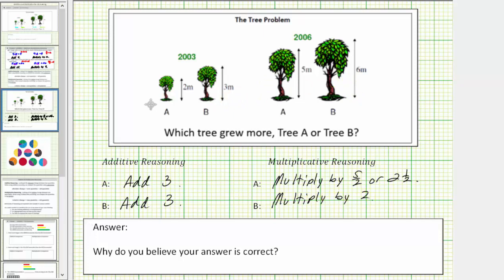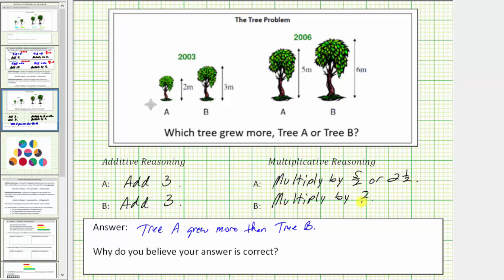There is more than one way to answer the question: which tree grew more? Using additive reasoning, we can say the trees grew by the same amount. Using multiplicative reasoning, we can say tree A grew more, because it grew two and a half times its height, while tree B only grew two times its height. So tree A grew more than tree B — tree A grew two and a half times its height, while tree B grew only two times its height.